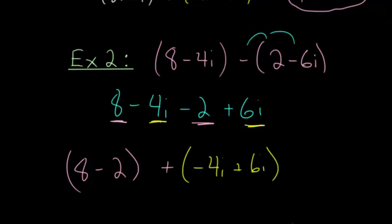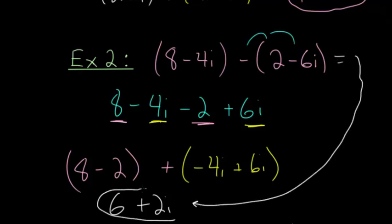And combining everything together, what we get is 6 for our real part, and then we have minus 4i plus 6i, which is plus 2i. So 8 minus 4i, when we subtract 2 minus 6i from that, we end up with the result of 6 plus 2i. So this number here answers this question.